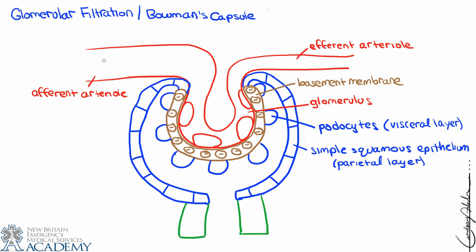Filtration occurs at Bowman's capsule, which functions as a funnel. Blood travels through the afferent arteriole and then passes through the glomerulus where there are fenestrations. As we reach the efferent arteriole, we notice it is strikingly narrow.